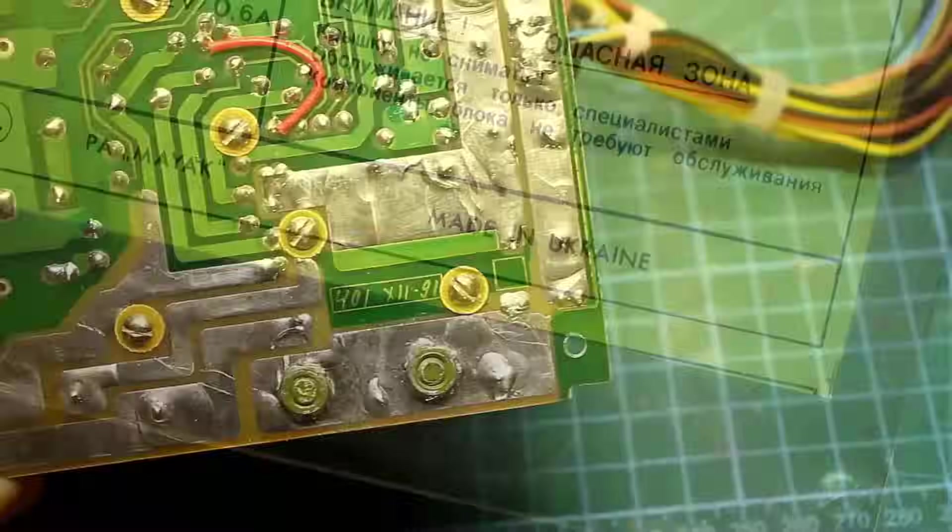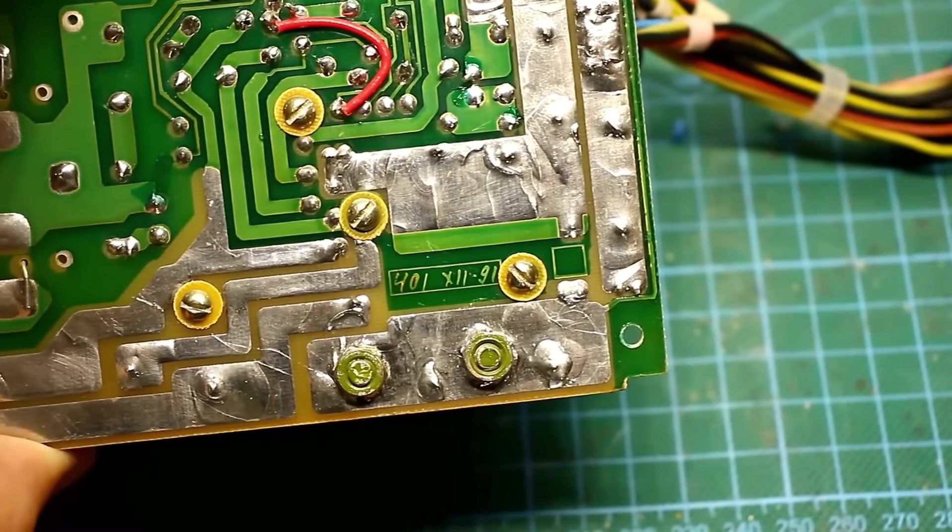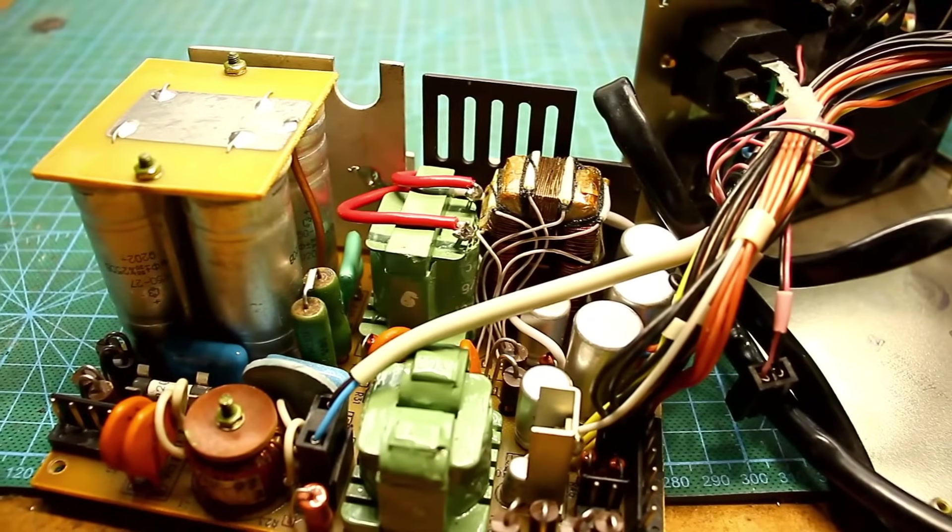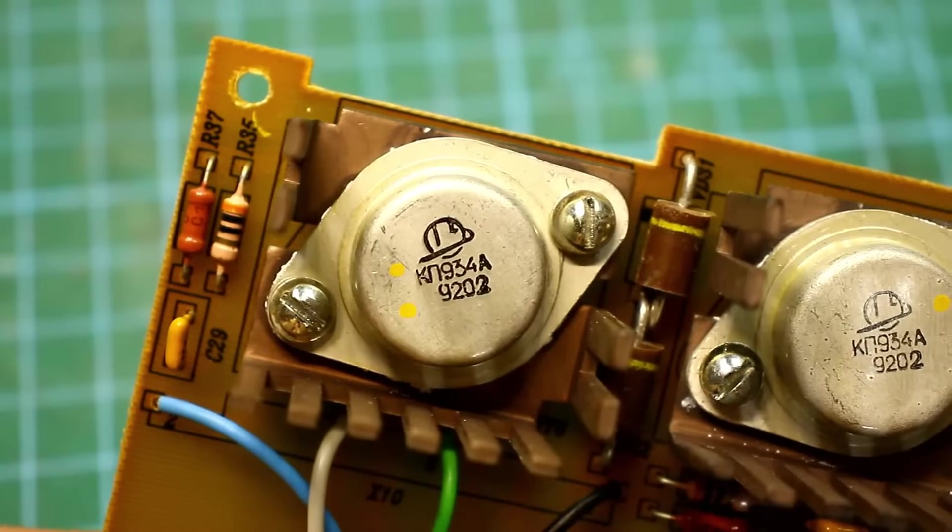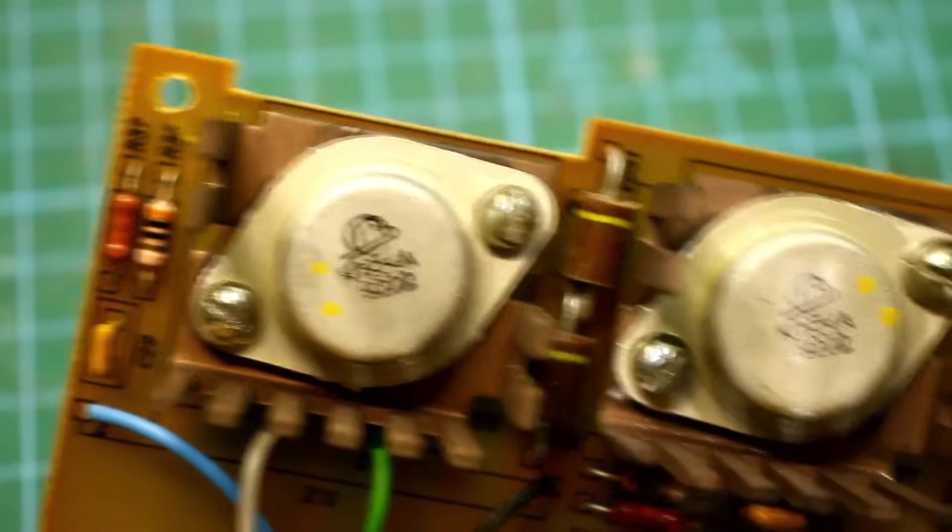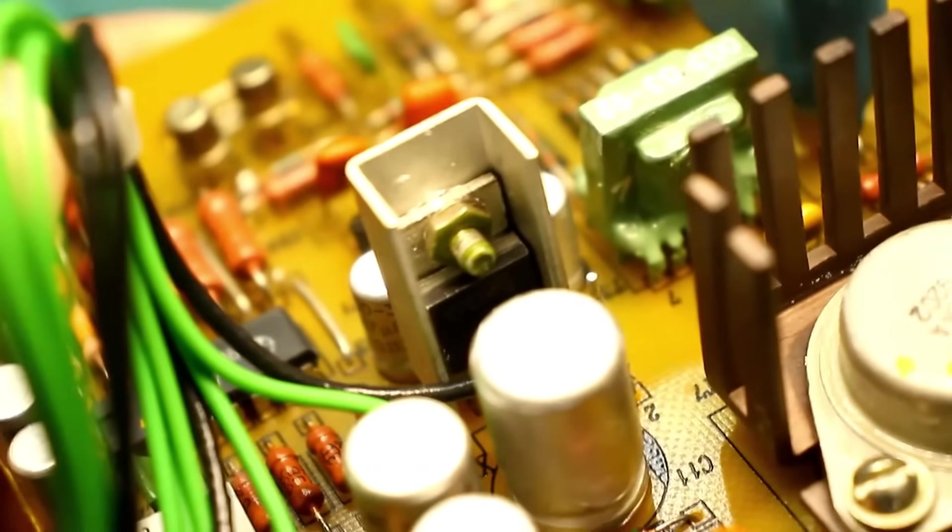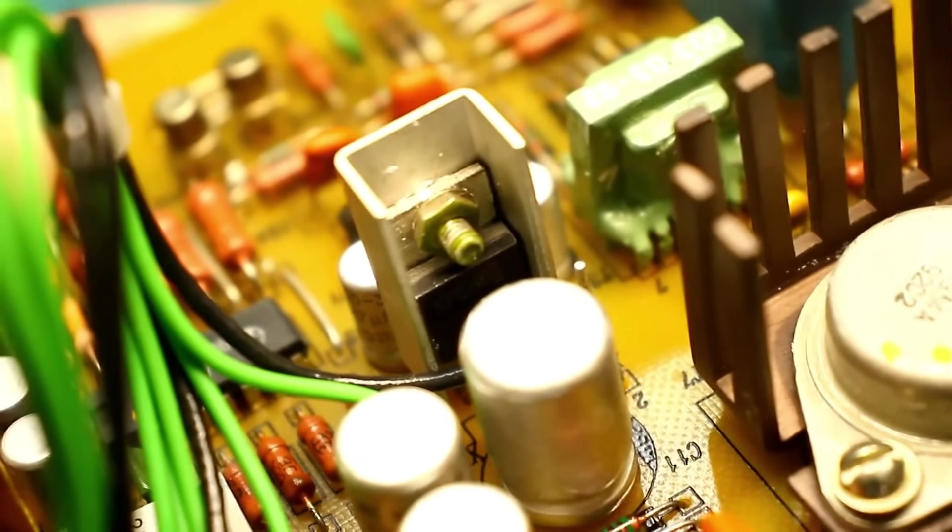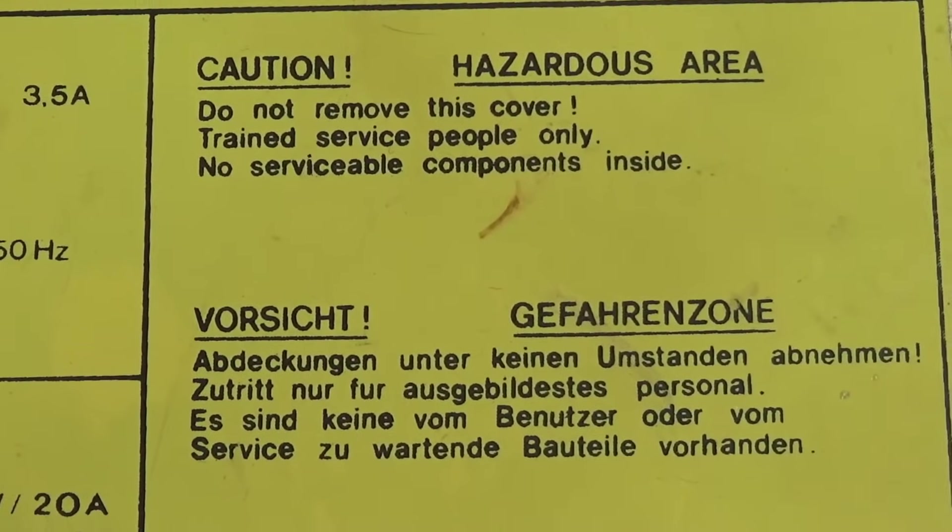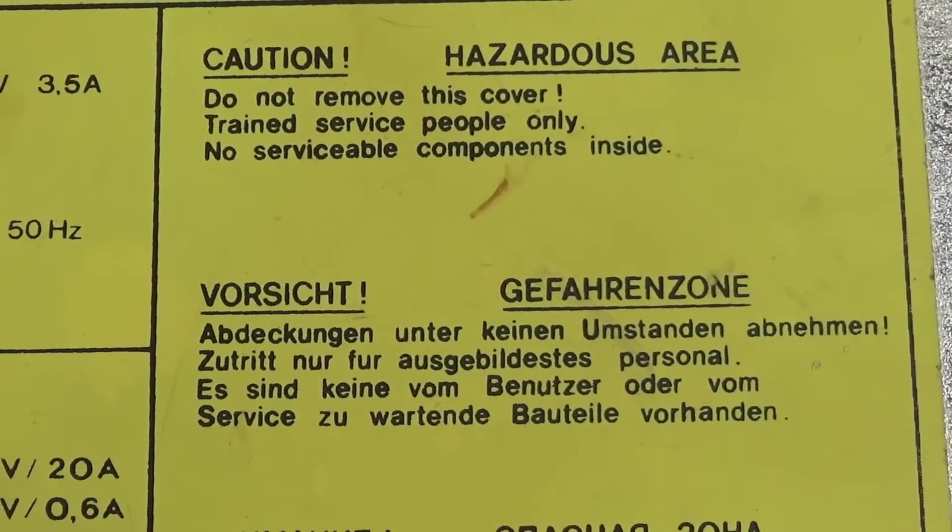Manufactured in Ukraine. The dating on the boards tells us it's the end of 1991, and many components have the same date. The newest ones are dated February 1992. The entire component base is Soviet. Judging by the foreign inscriptions, it's possible these units were also exported.